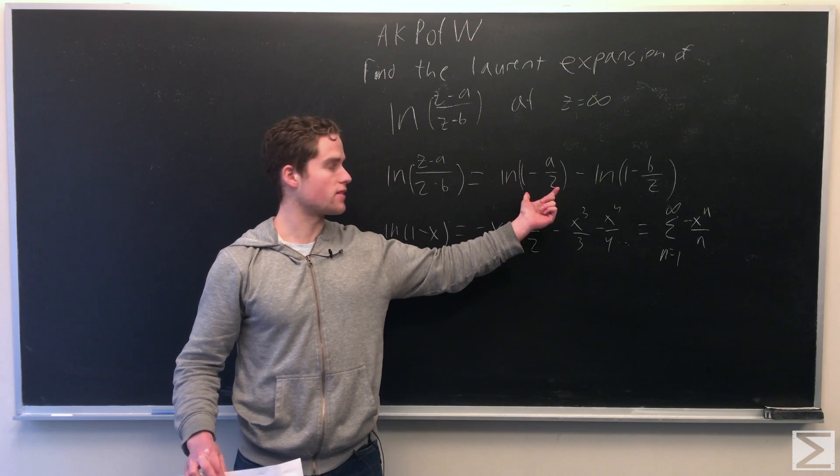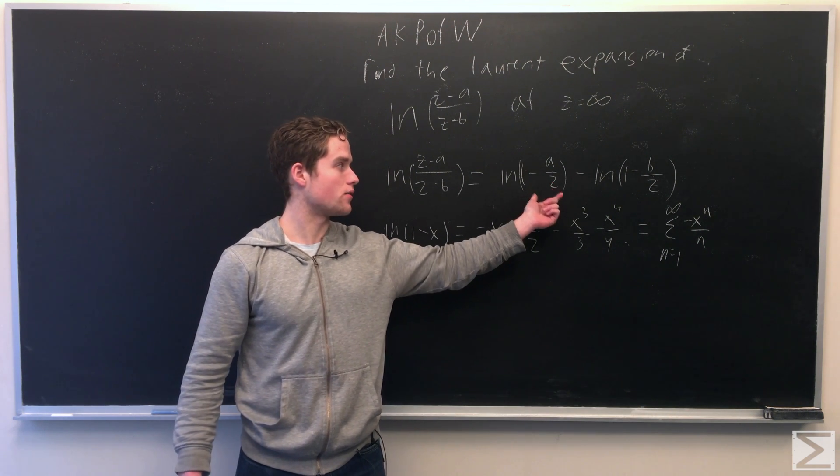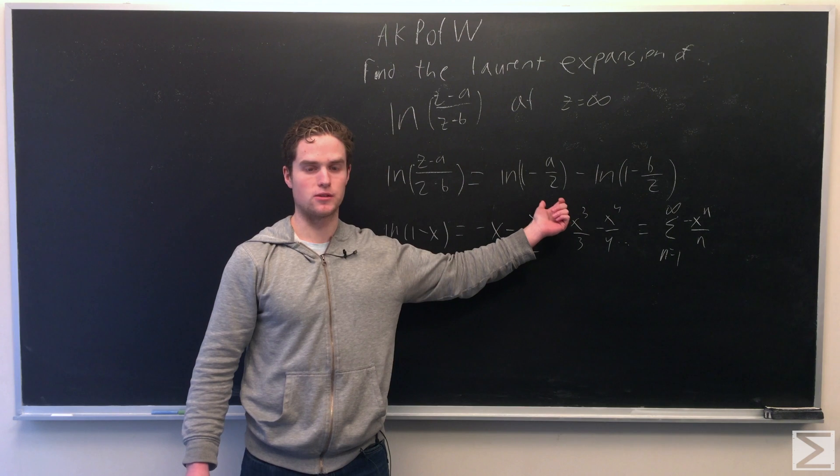So we can rewrite this as natural log 1 minus a over z minus natural log 1 minus b over z.